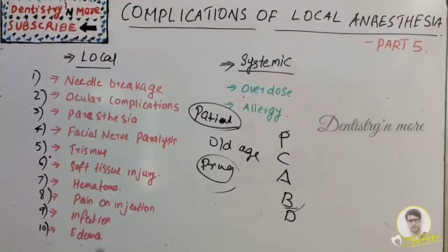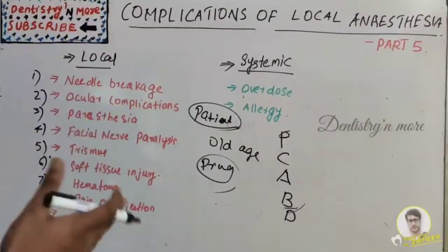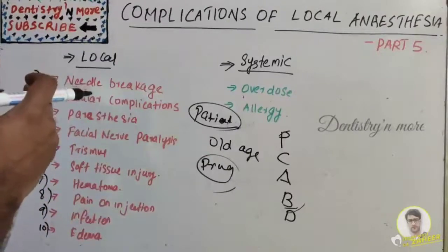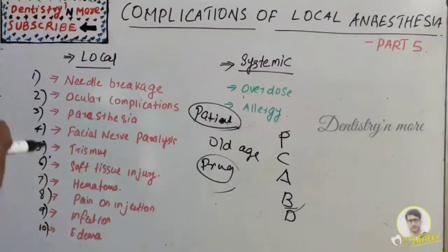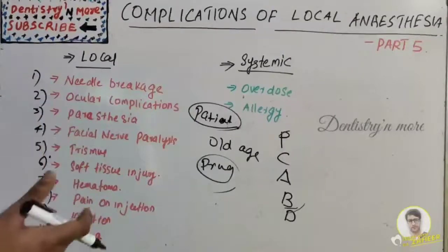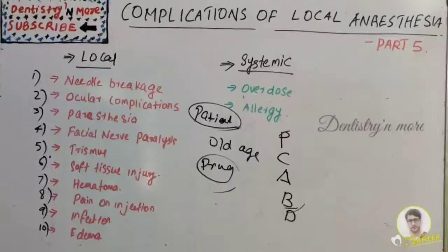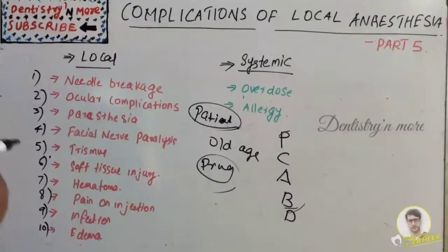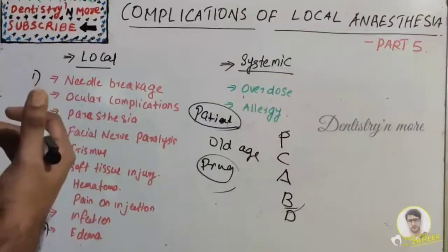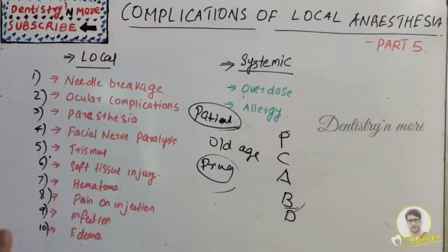For severe overdose where the patient is unconscious with rapid onset within one minute: protect the patient, immediately call for emergency medical assistance, start BLS (basic life support), and give IV anticonvulsants immediately. For severe overdose with slow onset between five to fifteen minutes: administer anticonvulsants via IV diazepam or midazolam, call for medical assistance, start BLS, and also give vasopressors and IV fluids.